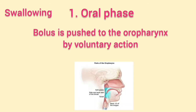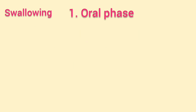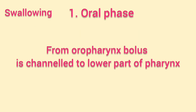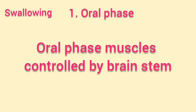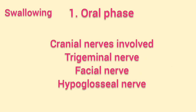The bolus is voluntarily moved into the upper part of the throat, called the oropharynx. From the oropharynx, the food bolus is channeled to the lower part of the pharynx. This step requires voluntary elevation of the soft palate to prevent food from entering the nose. The muscles controlling the oral phase of swallowing are stimulated by cranial nerves in the brainstem, including the trigeminal nerve, the facial nerve, and the hypoglossal nerve.